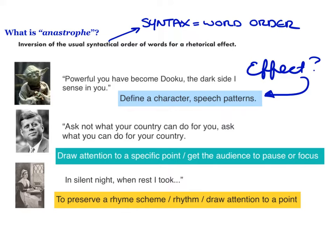Speaking of icons, let's take a look at President Kennedy's famous example: 'Ask not what your country can do for you, ask what you can do for your country.' What President Kennedy is doing is drawing attention to a specific point and getting the audience to pause or focus. Anytime someone speaks backwards, your brain expects language to flow in a normal pattern, so it gets us to pay attention. Anne Bradstreet uses anastrophe to draw our attention to certain points, but it also works to preserve her rhyme scheme and the rhythm — the musicality of her poem.